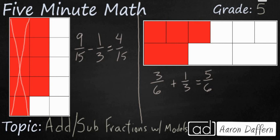Alright, hopefully you got your answers correct. The first is a subtraction problem: nine-fifteenths minus one-third equals four-fifteenths. The other problem is an addition problem: three-sixths plus one-third equals five-sixths.